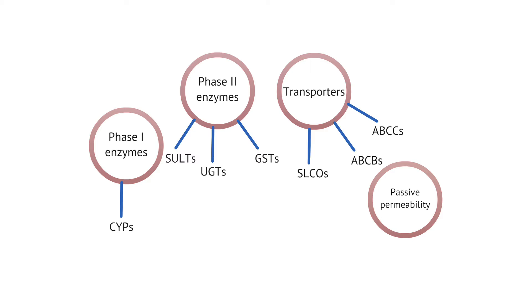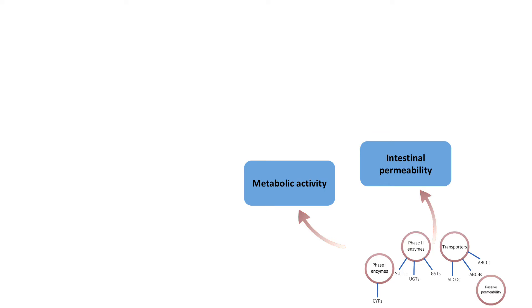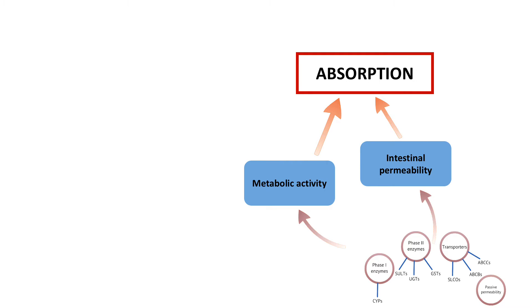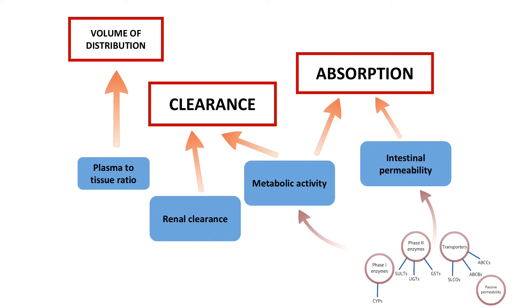We start PBPK modeling through experimental in vitro assays that characterize the key processes regulating PK — such as phase one and phase two enzymes for metabolism. We can integrate this knowledge; for example, phase one and phase two enzymes and passive permeability to predict intestinal permeability and metabolic activity. These two elements together define absorption. Renal clearance and metabolic activity are the main processes defining clearance. And if we have an understanding of plasma-to-tissue ratio, we can predict volume of distribution. So we have the three key blocks to predict PK: absorption, clearance, and volume of distribution.